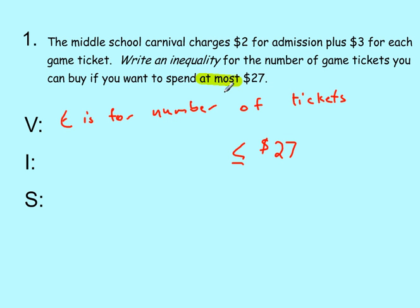And we are going to change this phrase: $2 for admission plus $3 for each game ticket. We are going to change that into an expression. So it is going to be $2 plus 3T, $3 times T. So there is our inequality.